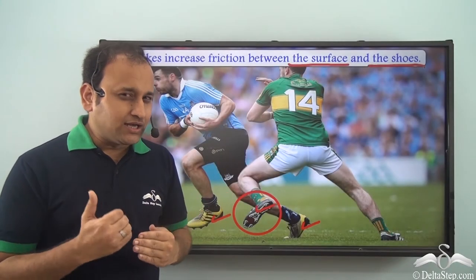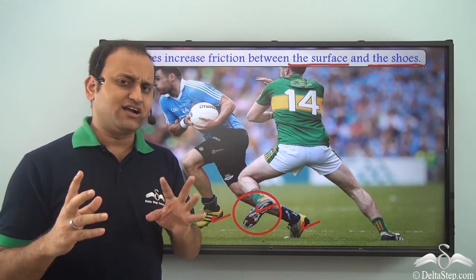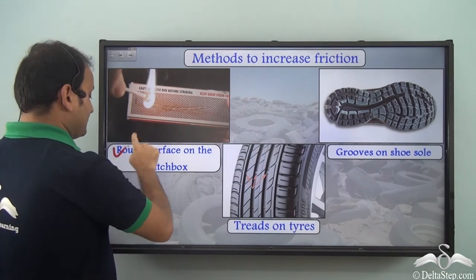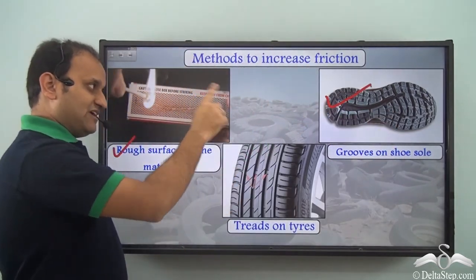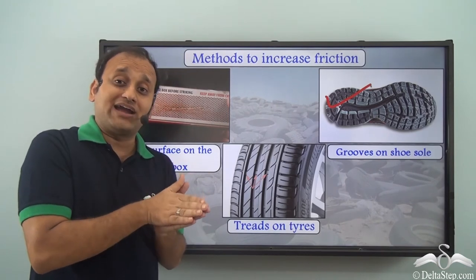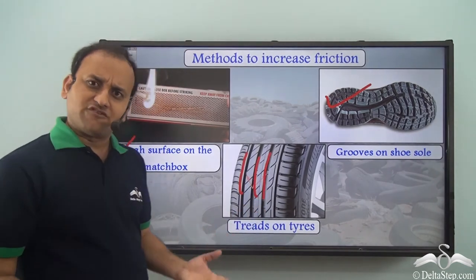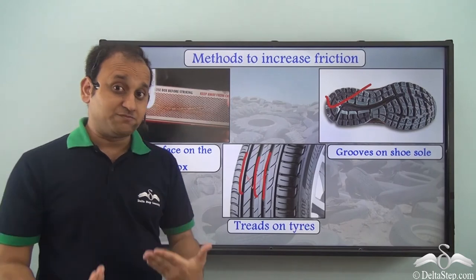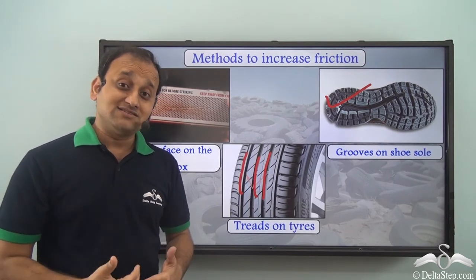Sometimes we need to increase friction so that we can utilize the force of friction. Some methods to increase friction include: the rough surface on a matchbox that allows us to create fire; grooves on shoes that create more friction with the ground, giving us a good grip; and treads on tires that make the surface rough, giving them a better grip on the road so they don't slip. By these methods, friction is increased so that we can utilize its positive value.